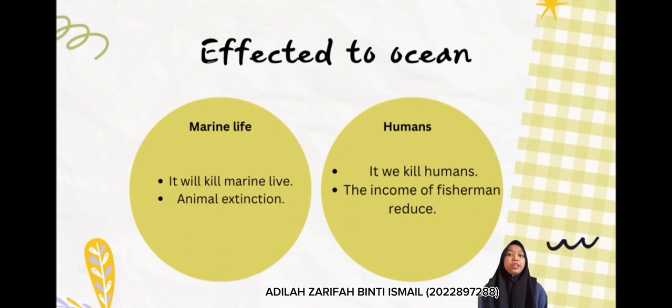Firstly, it can affect marine life. It will kill animals when they mistake plastic for food or get tangled in it. All the plastic floating in the ocean is incredibly harmful to animals. Turtles have been found with plastic straws stuck in their noses. It can also cause animals to become ill from the acidity.